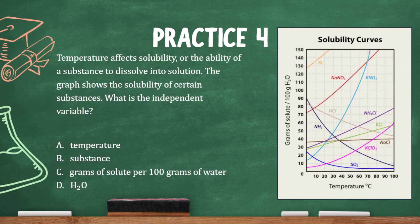Temperature affects solubility, or the ability of a substance to dissolve into solution. The graph shows the solubility of certain substances. What is the independent variable? Since we have a graph, we can use the hand trick — fingers pointing upward, thumb pointing to the right. The thumb aligns with the horizontal axis, which is temperature. So temperature is the independent variable, and the dependent variable is the vertical axis — answer C.